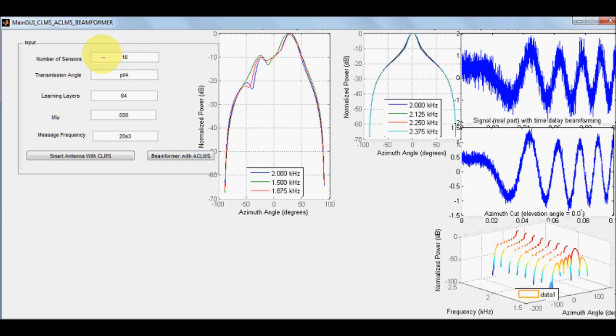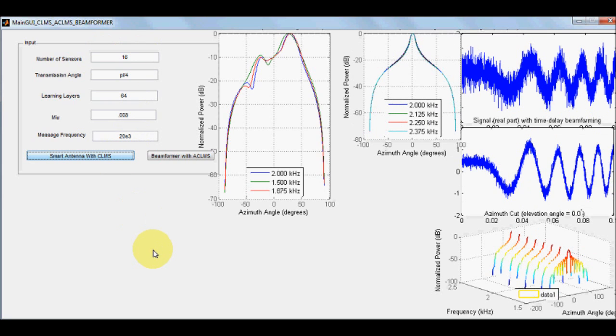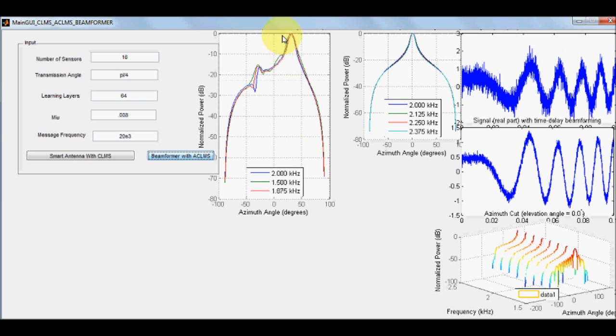Now, if you keep increasing the number of sensors, say if we go with CLMS, it will be bit more pointed. ACLMS, it will be bit more pointed, the noise will be reduced, go with 32.